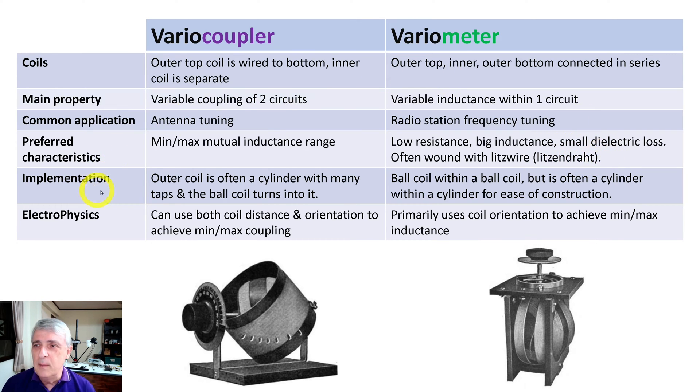Implementation: the outer coil is often a cylinder like this one with many taps, and the ball coil turns into it like that. And this is a ball within a ball, but oftentimes they use a cylinder, a ball within a cylinder, or cylinder with a cylinder, just because it's easier to make.